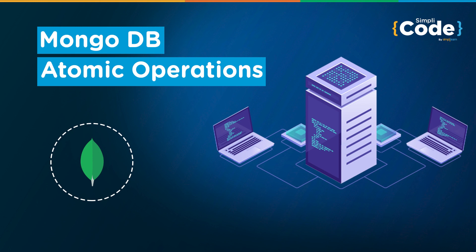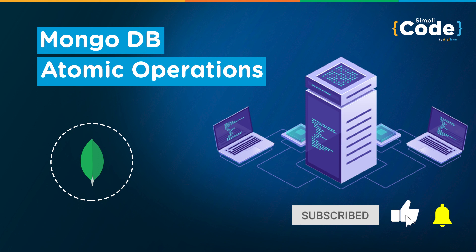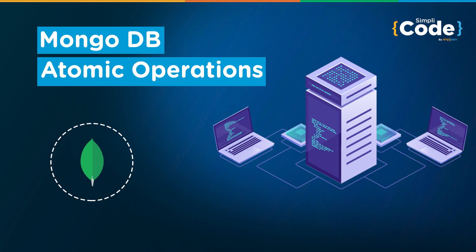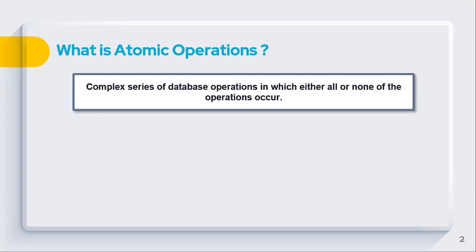In today's session, we'll be understanding how to perform atomic operations in MongoDB and the various constraints involved while performing these atomic operations and achieving atomicity in your MongoDB database. If you're new to the channel and haven't subscribed already, consider subscribing to our channel Simply Code to stay updated with all the latest content. Let's get started with today's topic.